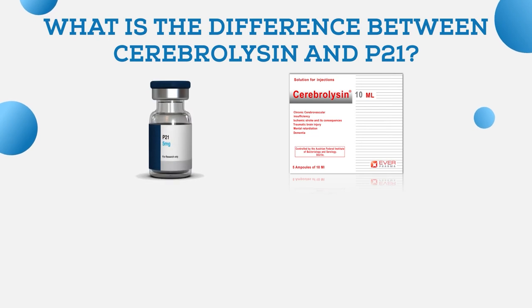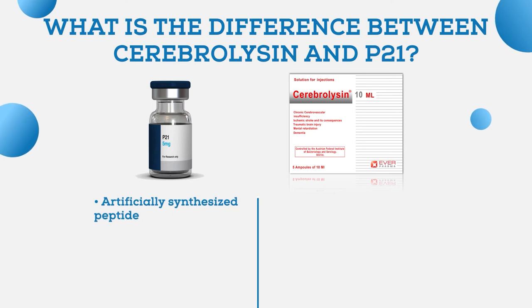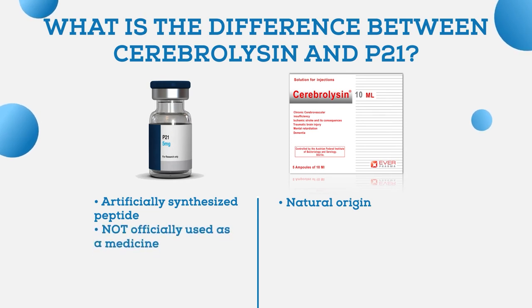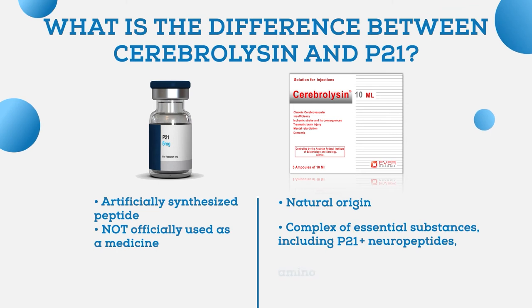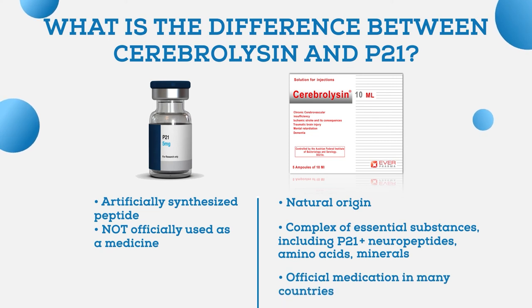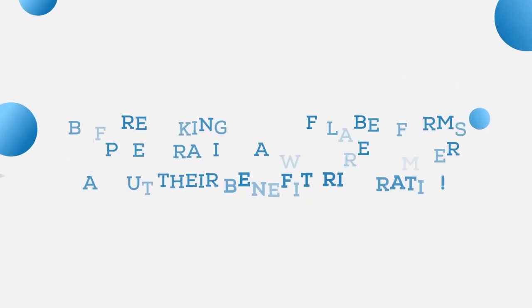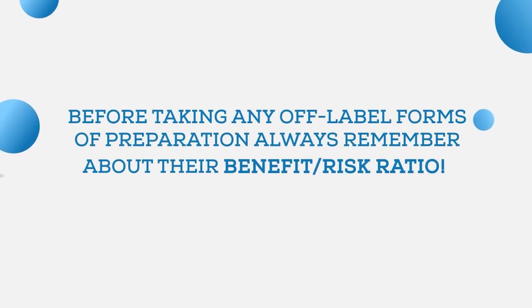Another popular question is about the difference between Cerebrolysin and P21. It is not quite right to compare these two directly. P21 is an artificially synthesized peptide, while Cerebrolysin is not, and P21 is not officially used as a medicine in any country. Cerebrolysin, on the other hand, is a complex of essential substances — it actually also contains P21 in its composition, but it also contains neuropeptides, amino acids, and minerals, and has been successfully and officially used in many countries for several decades.